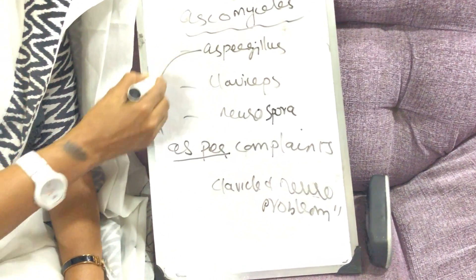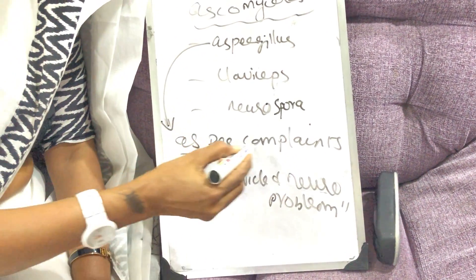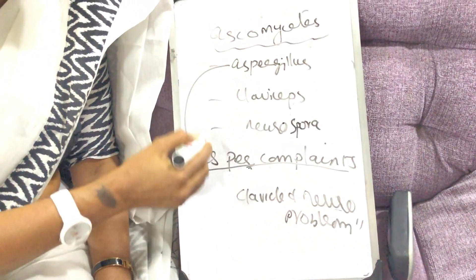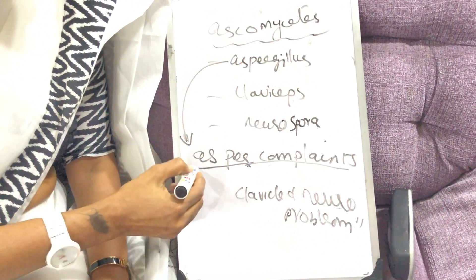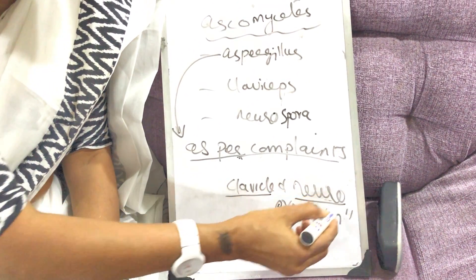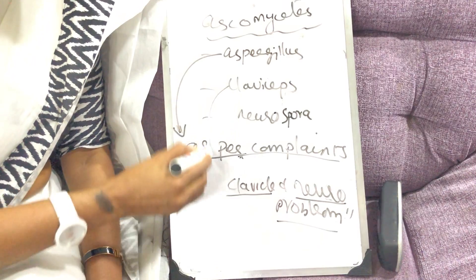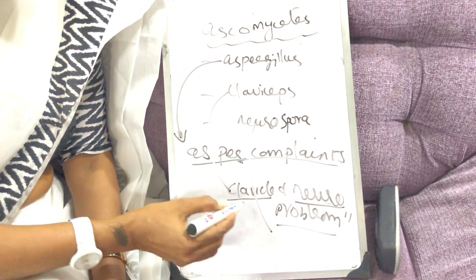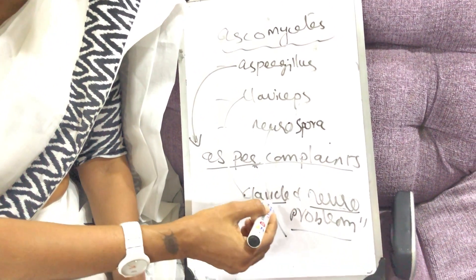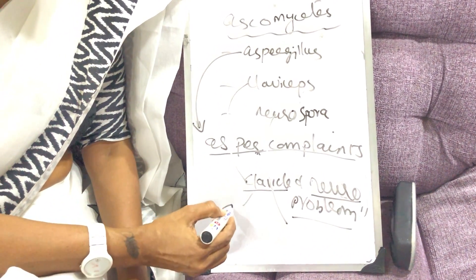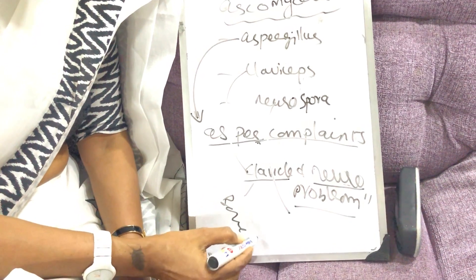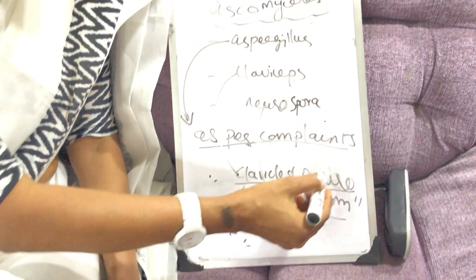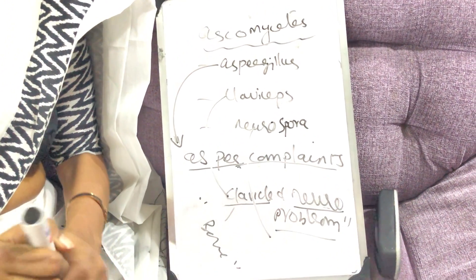What is the clue to remember this? Asper complains — he has a clavicle and neuro problem. Clavicle is a bone, remember. So clavicle refers to Claviceps, and neuro refers to Neurospora.